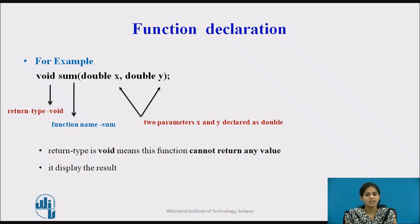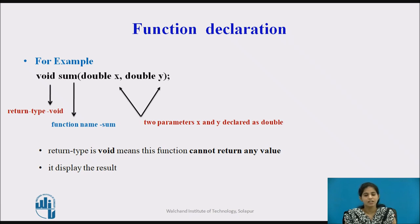Let us consider another situation where the return type is void instead of double. Here the return type is void, meaning the function will not return any value. The function name is sum, having two parameters x and y declared with data type double. It will just display the result without any return type.